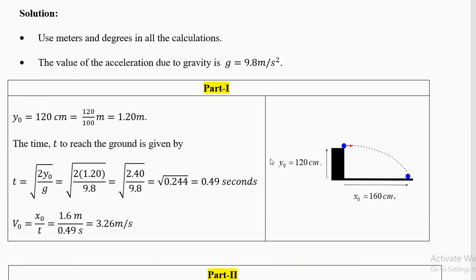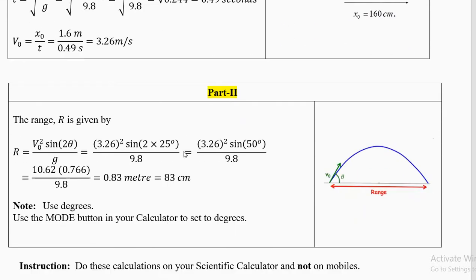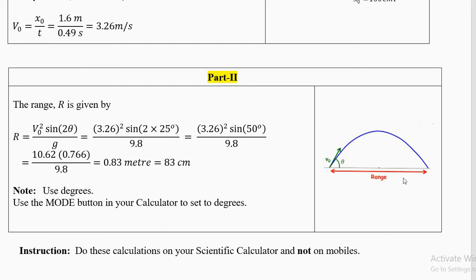Knowing the height of the launcher and the horizontal range, you can calculate the speed: 1.6 divided by 0.49 gives 3.26 meters per second. After getting the speed in part 1, use your regular projectile motion equations. The range R = v0² · sin(2θ) / g. So 3.26² × sin(50°) / 9.8: 3.26 squared is 10.62, sine of 50 is 0.766. Multiplying and dividing by 9.8 gives 0.83 meters, or 83 centimeters.